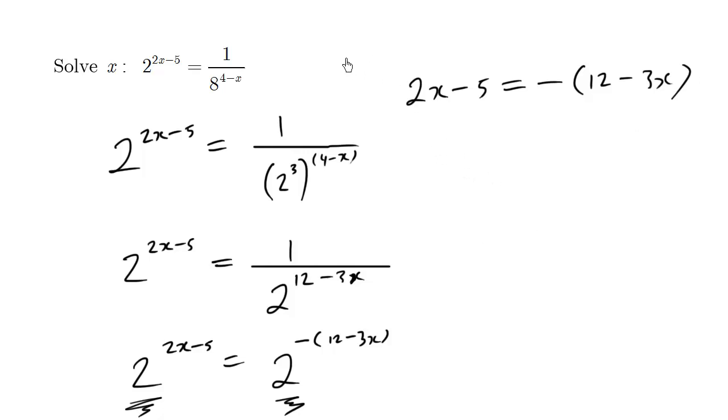So the key rule here is that when you have some base to some exponent, and then you have equals some other base to some different exponent, this implies that x equals y. That's how we got this line over here. Same base, different exponents, we can equate them.